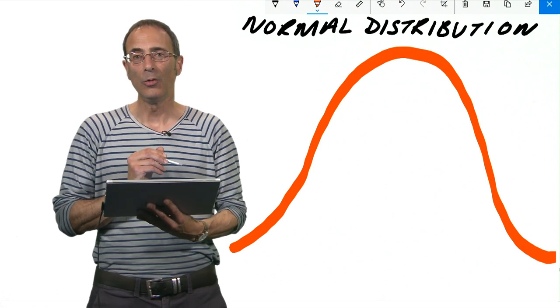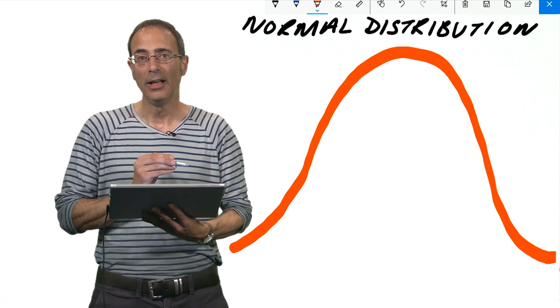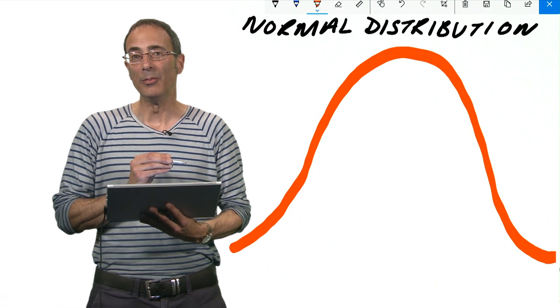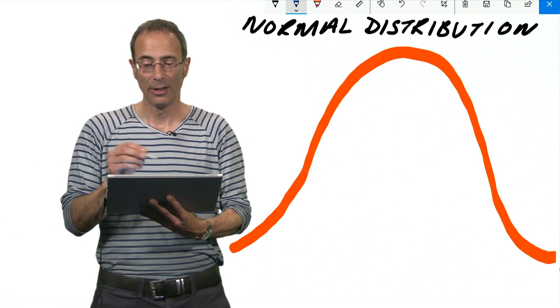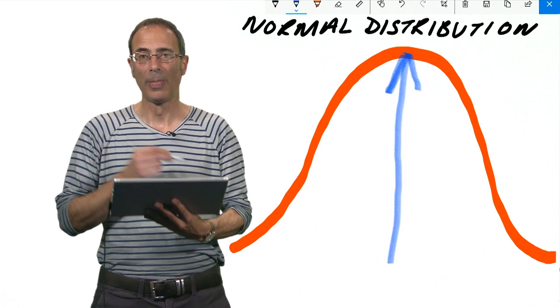The first thing is all the measures of central tendency or averages, which are the mean, the mode, and the median, they're all found in exactly the same place. They're all found at the highest point in the curve.